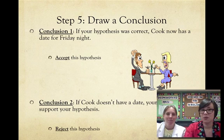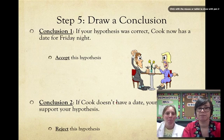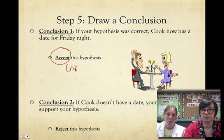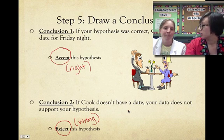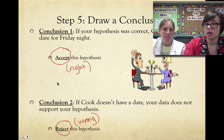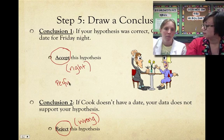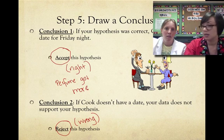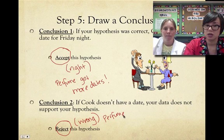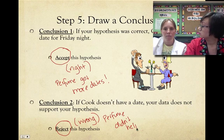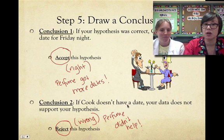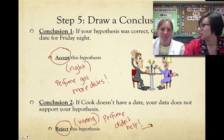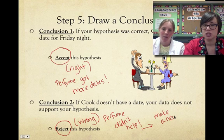The last step of the scientific method is to draw a conclusion. There are two conclusions you can come up with: you can either accept your hypothesis, meaning it was right, or reject your hypothesis, meaning it was wrong. If the hypothesis was correct and we accept it, wearing perfume should have resulted in more dates. If the perfume didn't help and she got no dates, we reject it. But if we reject a hypothesis, we need to make a new one and go back to restart from the very beginning — science is a cyclical process. More often than not we're rejecting hypotheses, so you just have to go back and try again.